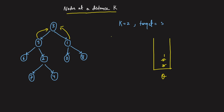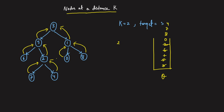Next we take 5. The left of 5 is 6, so we push 6 and mark 6's parent as 5. The right of 5 is 2, so we push 2 and mark 2's parent as 5. Then we take 1: the left of 1 is 0, so push 0 with parent 1; the right of 1 is 8, so push 8 with parent 1. Then we take 6 — it has no left or right. Then we take 2: its left is 7 (push 7, parent is 2) and its right is 4 (push 4, parent is 2).